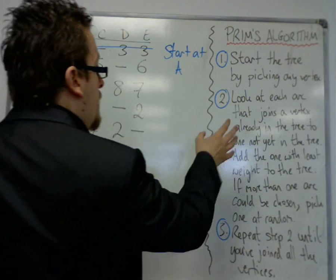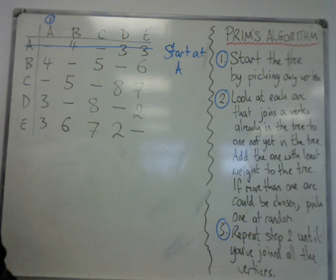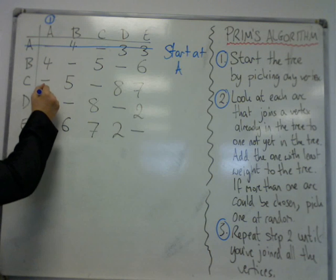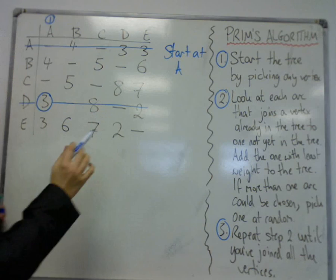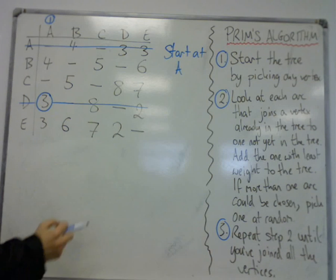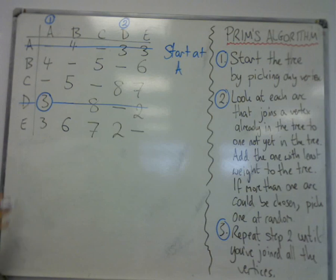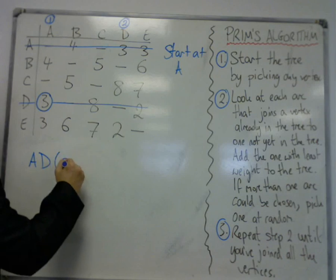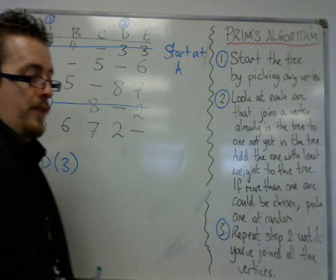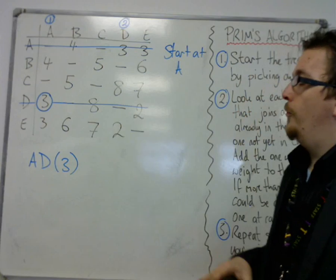Because this is one of those cases where if more than one arc could be chosen, pick one at random. So, I'm going to pick D. I circle it. I delete the rest of the row, because I don't want to come back to D and create a cycle. And then we put the number 2 over the top of the D, to signify that we've gone to that vertex second. Now, here, I would also write down AD 3, to make sure I've got a definitive record of the edges that I've picked in that order.